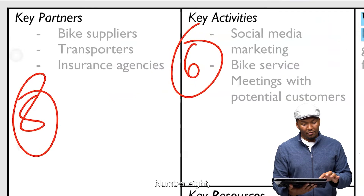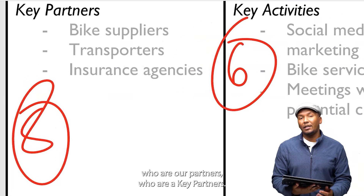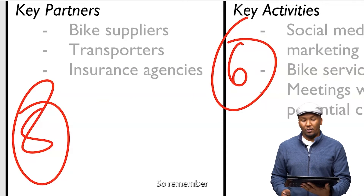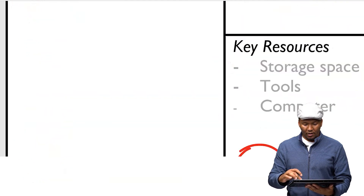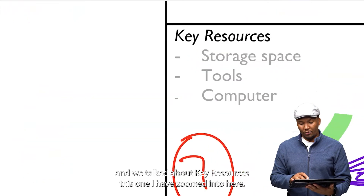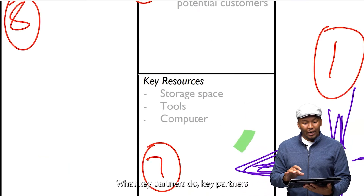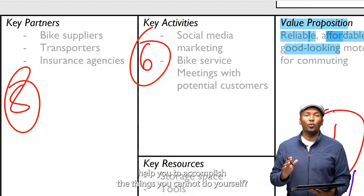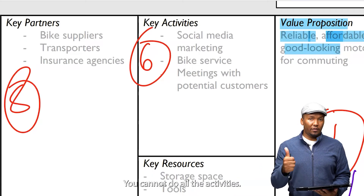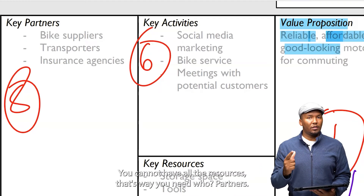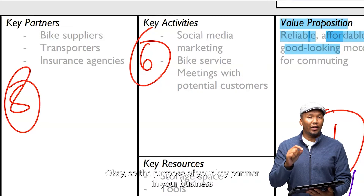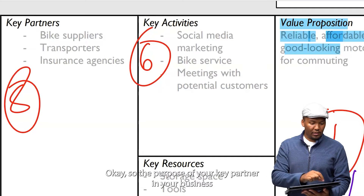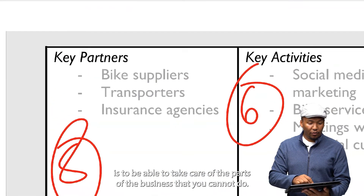Number eight: who are our key partners? We talked about key activities and key resources. What key partners do is help you to accomplish the things you cannot do yourself — the activities you cannot do, the resources you cannot have. That's why you need partners. The purpose of your key partner in your business is to take care of the parts of the business that you cannot do.